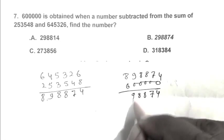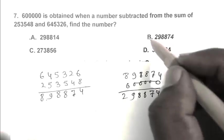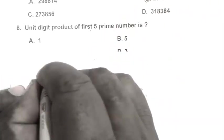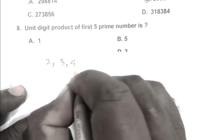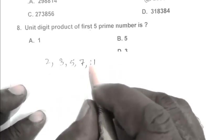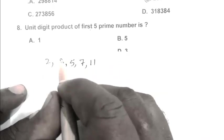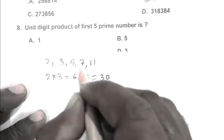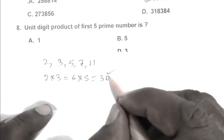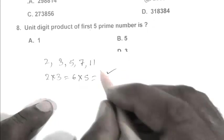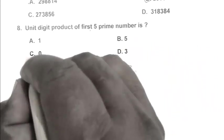Question number 8. Unit digit of the product of first 5 prime numbers. The first 5 prime numbers are 2, 3, 5, 7, and 11. We multiply: 2 times 3 is 6. If we multiply 6 with 5 we get 30, so we get 0 in the unit place. Whenever we multiply any number with 0 we get 0 as the unit place. 0 is the right answer, C.